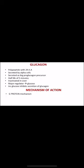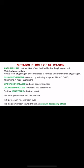Glucagon is a polypeptide of 29 amino acids secreted by alpha cells of the pancreas. It is synthesized as proglucagon and cleaved to the active form. Its half-life is five minutes and it is inactivated by the liver. The major regulator is glucose — hyperglycemia inhibits glucagon secretion. Its mechanism of action uses the G-protein system.